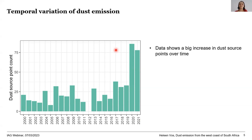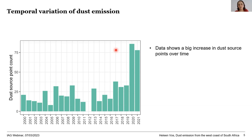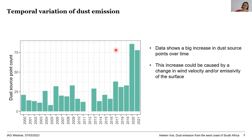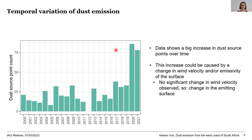There is a big increase in dust source points over time. When we see such a large increase, there are basically two explanations: either there are stronger or more frequent winds, or there is a change in the emissivity of the surface — something happening on the surface causing the increase. Since we did not see a significant change in wind velocity, this makes us think something is happening on these surfaces.